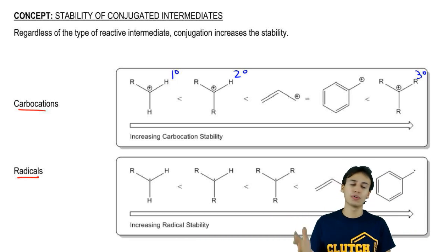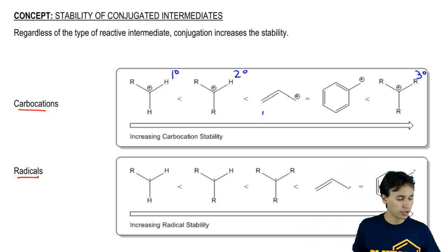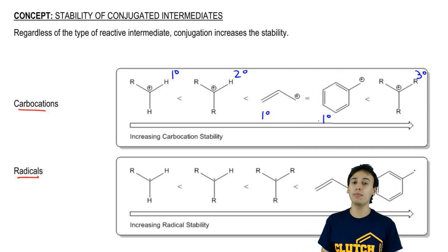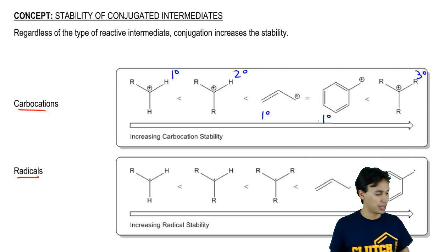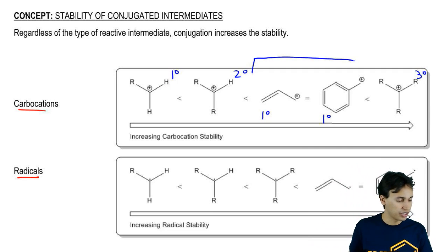But notice that we have these carbocations in the middle that are both primary. I included these primary carbocations, but what's the difference? Now you know that these are conjugated. These are conjugated primary carbocations.